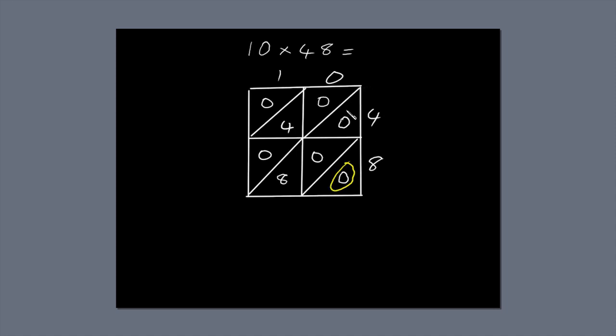Next, add up the numbers along the diagonals. 0, 0 plus 0 plus 8 is 8. 0 plus 4 plus 0 is 4. And 0.